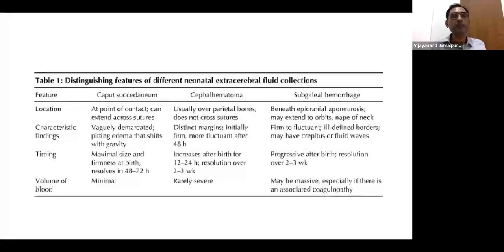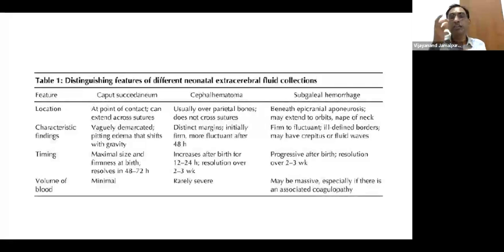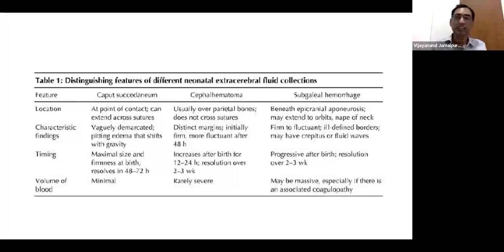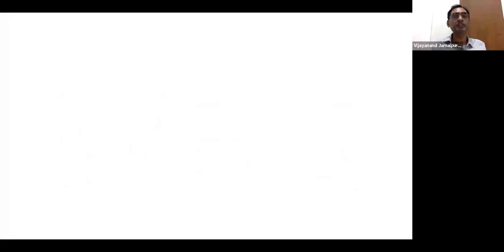Caput succedaneum is vaguely distributed all over the sutures. Cephalohematoma is limited by sutures and clearly demarcated. Subgaleal, on the other hand, is freely moving and can extend anywhere. It worsens with coagulopathy, and on top of that, the increasing hemorrhage itself can also precipitate coagulopathy — very dangerous.